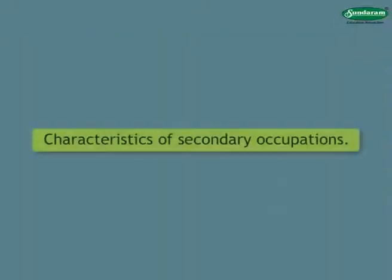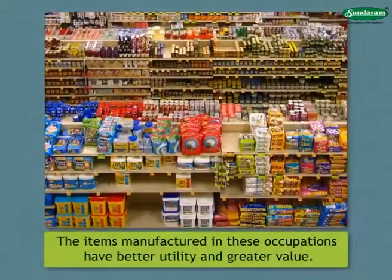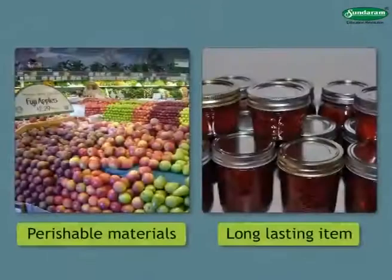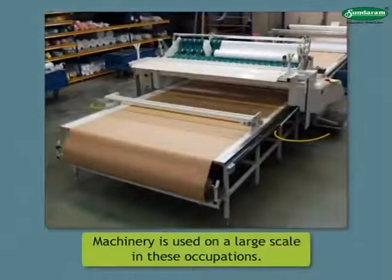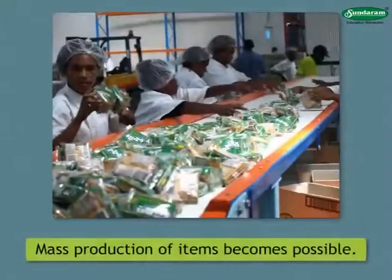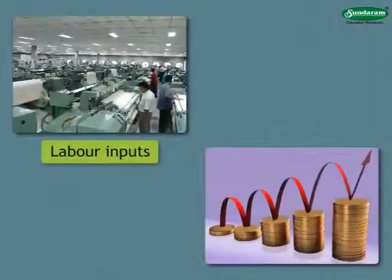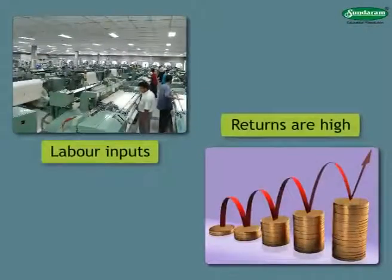The following are the characteristics of secondary occupations. The items manufactured in these occupations have better utility and greater value. From perishable materials, long-lasting items can be obtained. Machinery is used on a large scale in these occupations. Mass production of items becomes possible. Compared to the labor inputs, the returns are high.